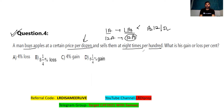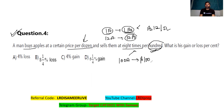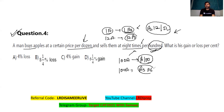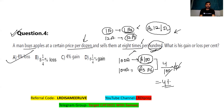Because he's selling at eight times per hundred, that means eight times of the per dozen price of 12 rupees — so he's selling 100 apples at 96 rupees. He's purchasing at 100 rupees and selling at 96, so there's a loss of 4 rupees on an investment of 100. Therefore there's a loss of 4%, and option A is the correct answer.